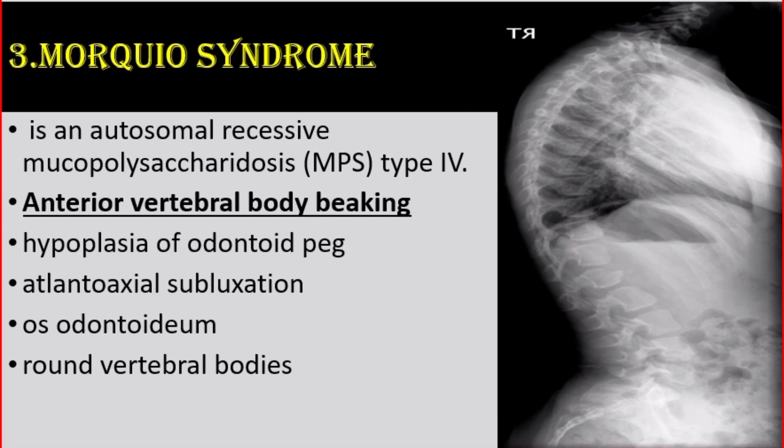Number 3: Morquio syndrome. It is an autosomal recessive mucopolysaccharidosis type 4, in which there is anterior-inferior vertebral body peaking, hypoplasia of the odontoid peg, atlanto-axial subluxation, os odontoideum, and round vertebral bodies.